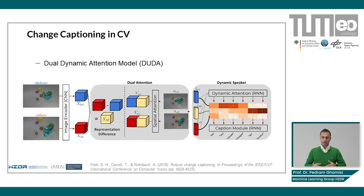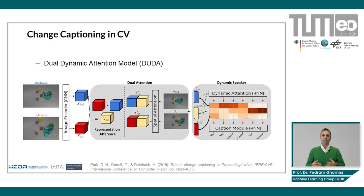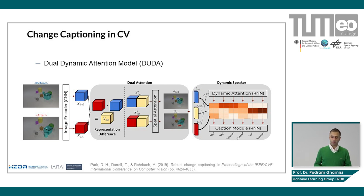One of the well-established works in the computer vision community is the Dual Dynamic Attention Model, or DUDA, which investigates attention mechanisms. The authors wanted to capture the most important changes, exclude irrelevant changes, localize them, and produce grammatically correct text descriptions for those changes.